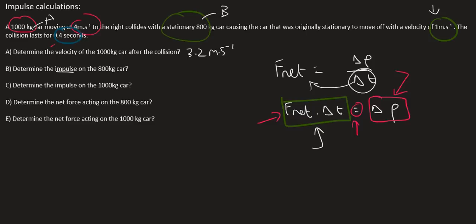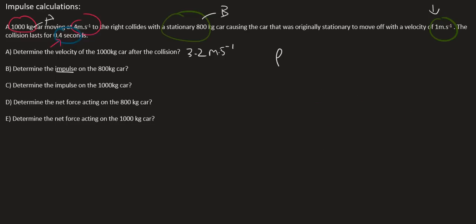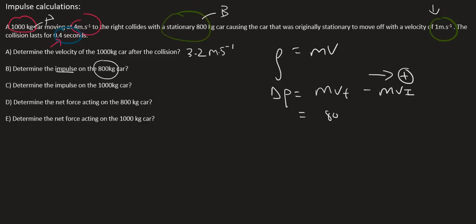In this question they've given us time, but we don't know F_net. So we're going to calculate the impulse using the change in momentum. Remember that change in momentum is mass times velocity final minus mass times velocity initial. This is for the 800 kilogram car, and we must always choose a direction as positive. It's an 800 kilogram car, its final velocity is 1, and its original velocity is 0 because it was stationary. This gives us 800.